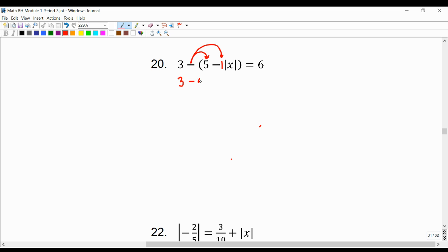So we have 3 minus 5. This is more or less negative 1 times 5, which is negative 5, plus absolute value of x. Negative 1 times negative 1 is a positive 1, but I don't need to write it. Equals 6.